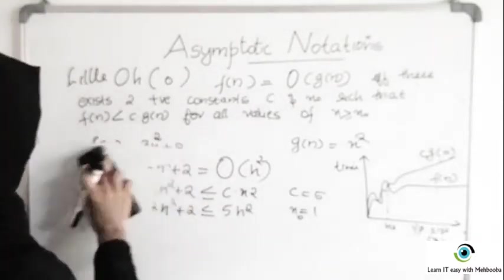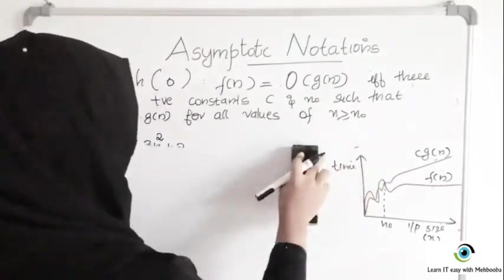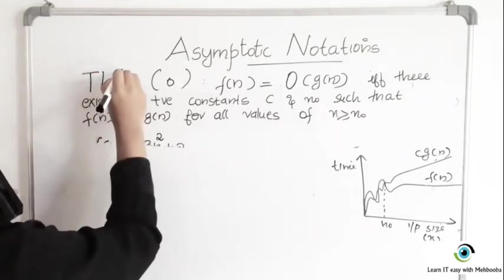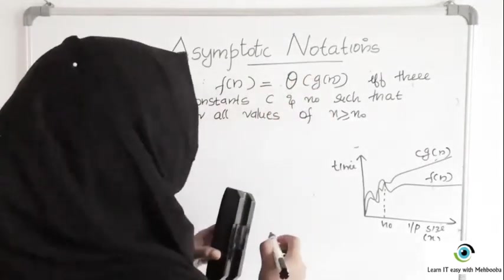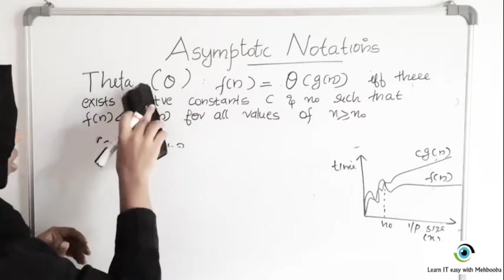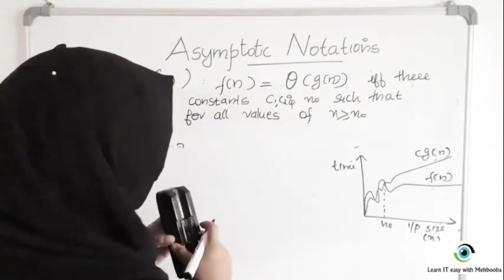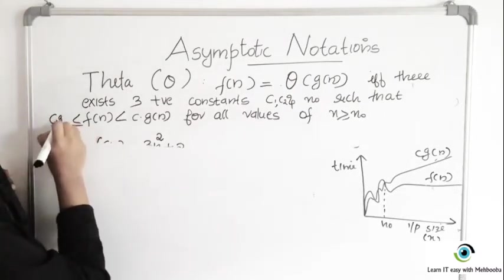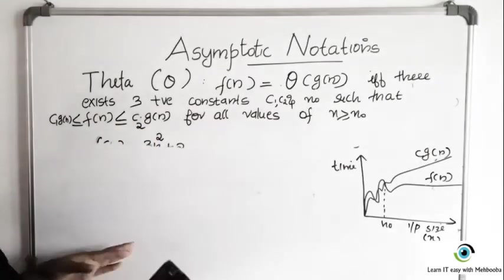Now we will see Theta, which gives you the average case complexity. The definition is: F of N equals Theta of G of N if there exist three positive constants C1, C2, and N0 such that C1 times G of N is less than or equal to F of N, which is less than or equal to C2 times G of N, for all values of N greater than some N0.